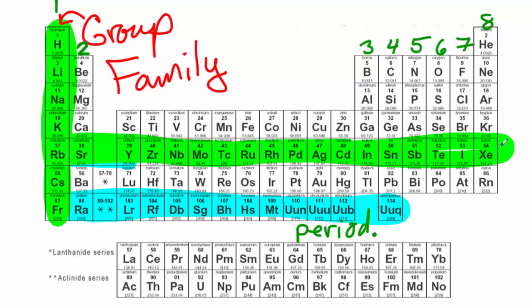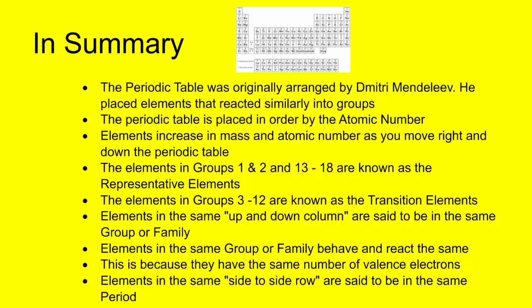In summary, the periodic table was originally arranged by Dmitry Mendeleev. He placed elements that reacted similarly into groups. The periodic table is placed in order by atomic number. Elements increase in mass and atomic number. They basically get bigger as you move to the right and down on the periodic table. The elements in groups 1 and 2 and 13 through 18 are known as the representative elements. The elements in groups 3 through 12 are known as the transition elements. Elements in the same up and down group are said to be in the same group or family. Elements in the same group or family behave and react the same because they have the same number of valence electrons. Elements in the same side-to-side row are said to be in the same period.